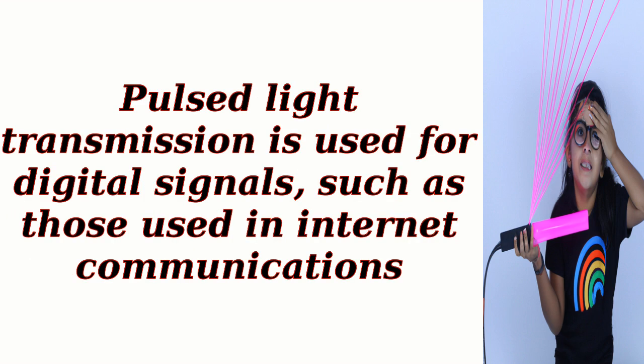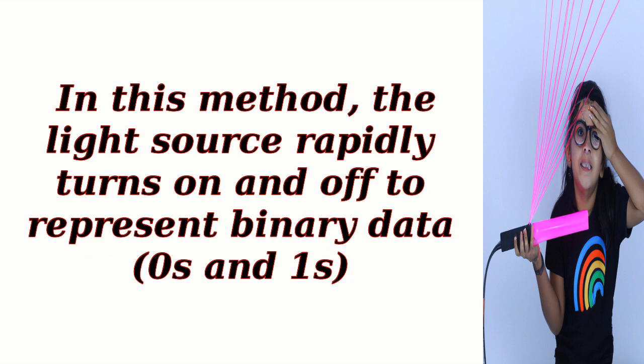Pulsed light transmission is used for digital signals, such as those used in internet communications. In this method, the light source rapidly turns on and off to represent binary data — zeros and ones.